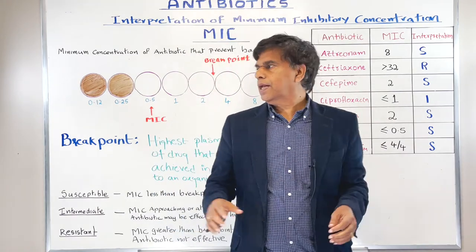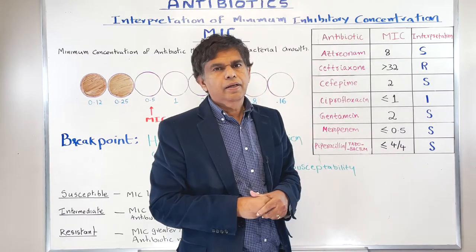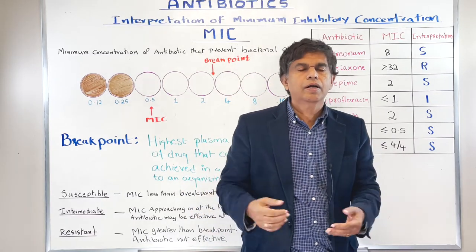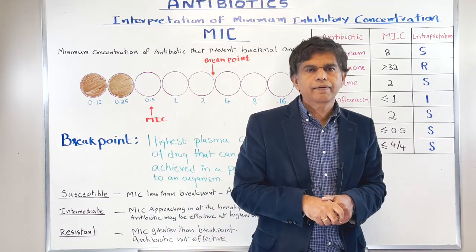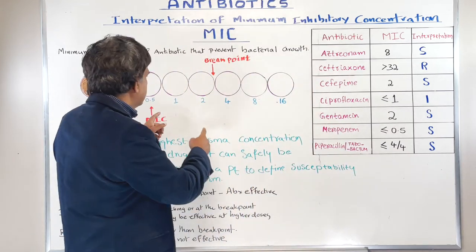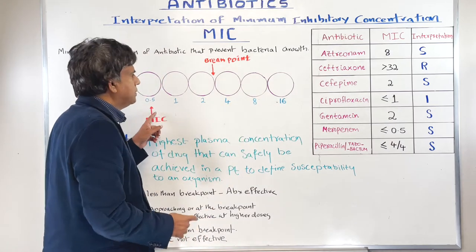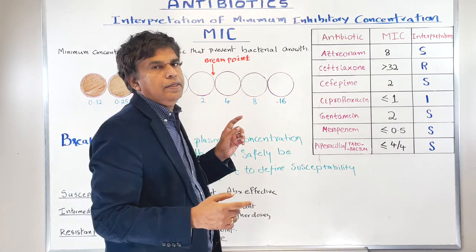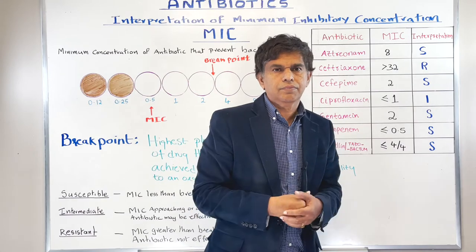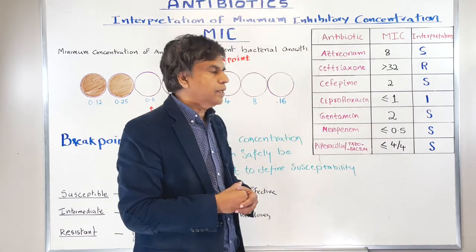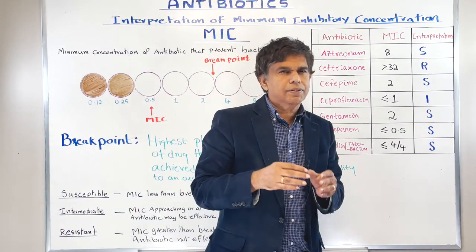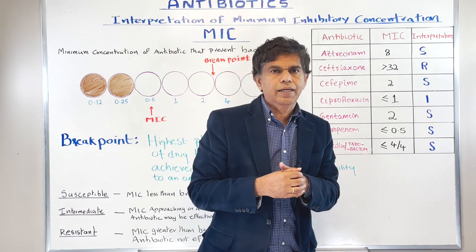Where do you get the breakpoint values? You can Google search them — they are lab-specific set values that remain fairly constant. For example, aztreonam may have a breakpoint of 4, ciprofloxacin around 2 or 3. The important concept is: the greater the distance between the MIC and the breakpoint, the safer the drug. If MIC and the breakpoint are very close, you have a tiny safety window and need to be careful.